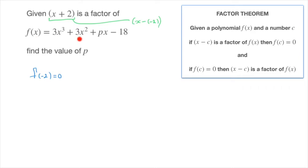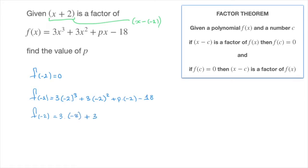Replacing x by negative 2 inside our polynomial leads to the following: f of negative 2 equals 3 times negative 2 cubed, plus 3 times negative 2 squared, plus p times negative 2, minus 18. That gives us 3 times negative 8, plus 3 times 4, plus negative 2 times p, minus 18 — which is negative 24 plus 12 minus 2p minus 18. Simplifying, we find f of negative 2 equals negative 30 minus 2p.